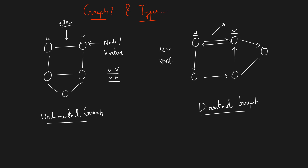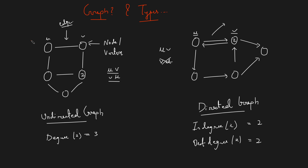Now let's talk about in-degree and out-degree. In an undirected graph we simply have degree. Consider vertex 2: its degree is 3, because degree is the number of edges connected to a node. Since the graph is undirected we don't distinguish incoming from outgoing — we just count connected edges. Here there is the first edge, the second edge, and the third edge, so the degree of vertex 2 is 3. There is a property: the total degree of all nodes in an undirected graph equals twice the number of edges.